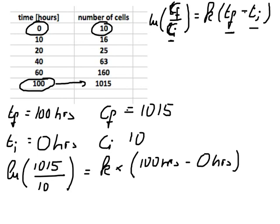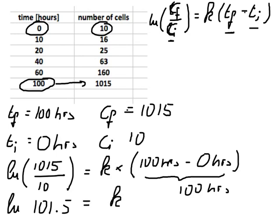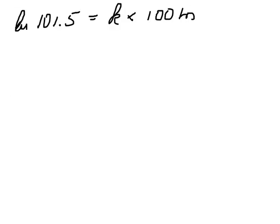All we need to do is do the calculation. This would be 100 hours, and here we would have ln 1015 divided by 10, that would be 101.5, equals k times 100 hours. We can very easily calculate that. So ln 101.5 that gives us 4.62 equals k times 100 hours.